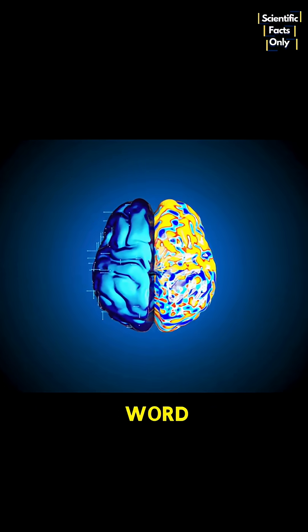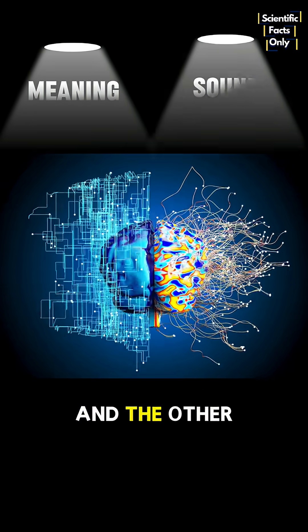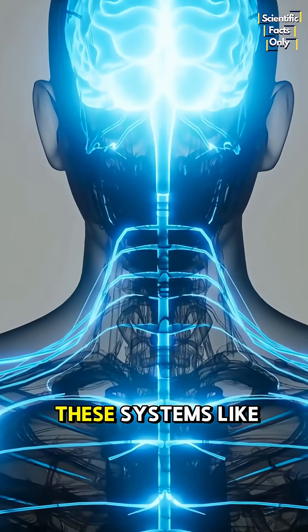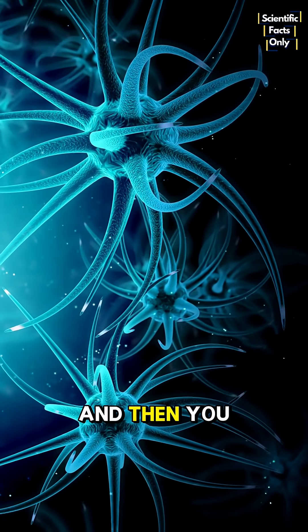When you try to recall a word, two systems switch on. One stores the meaning of the word, and the other stores the sound of it. Normally, neurons connect these systems like a highway, meaning flows into sound. And then you speak.